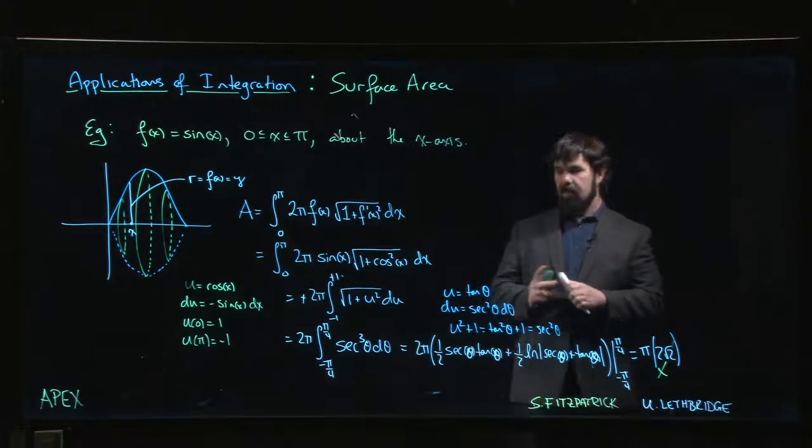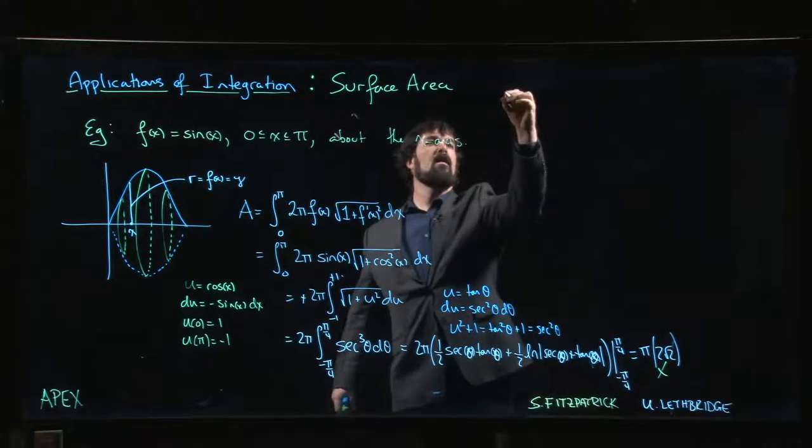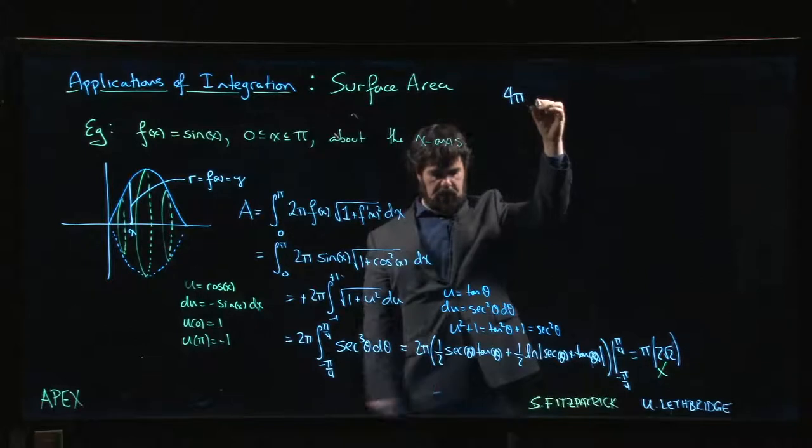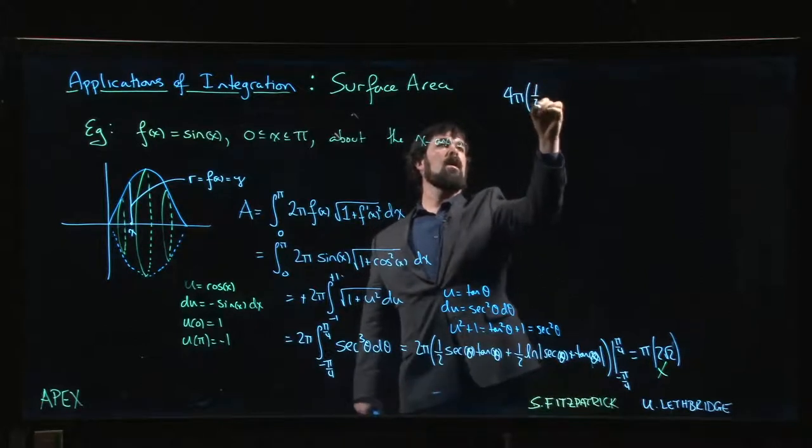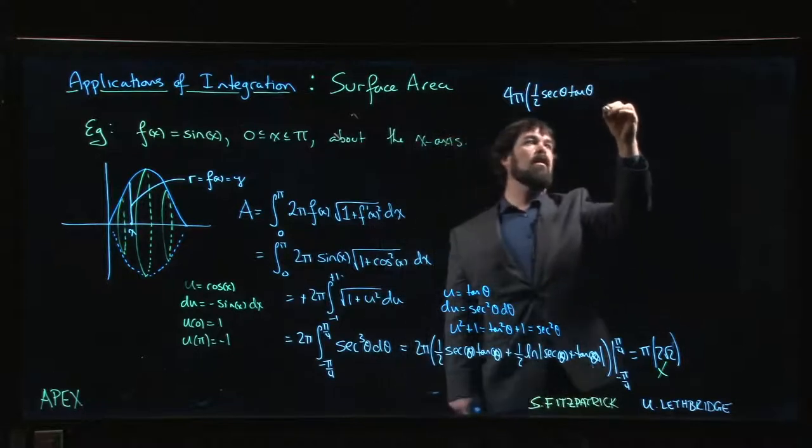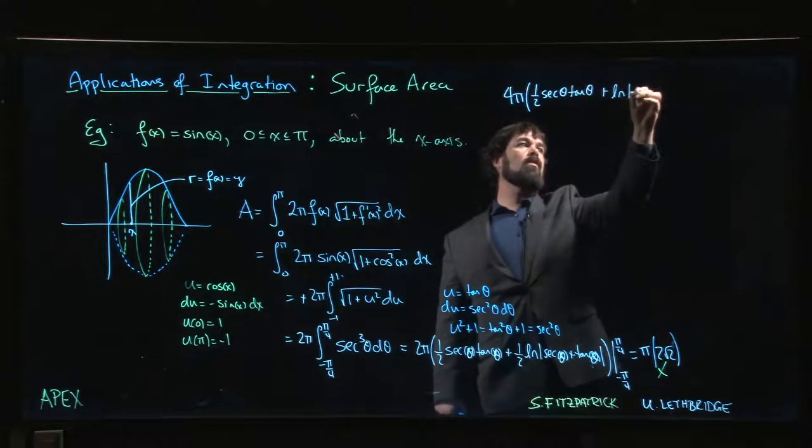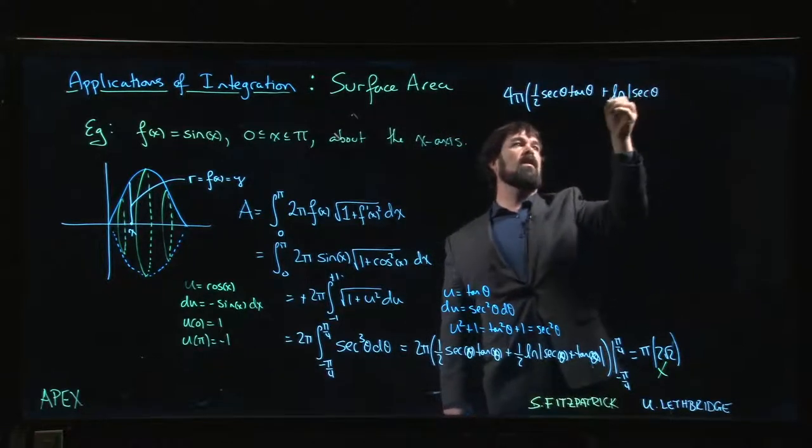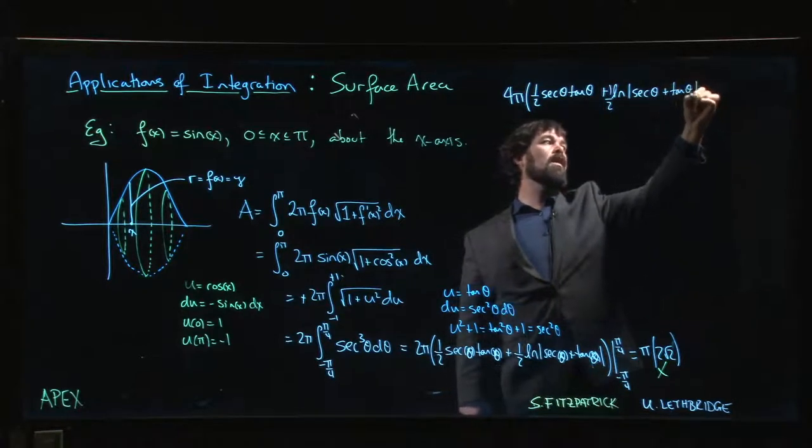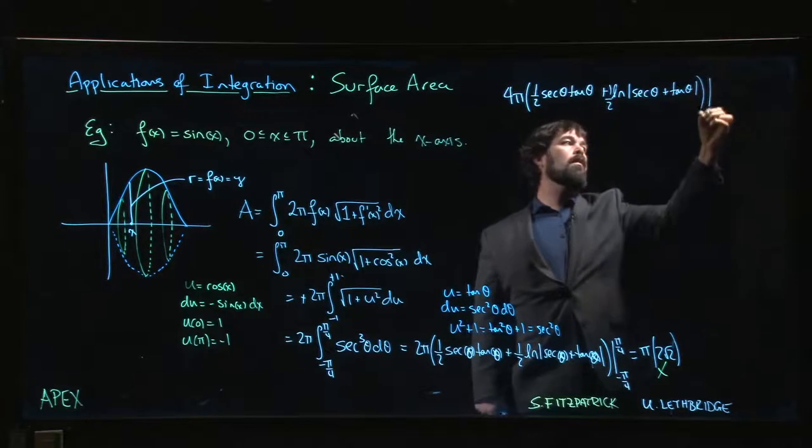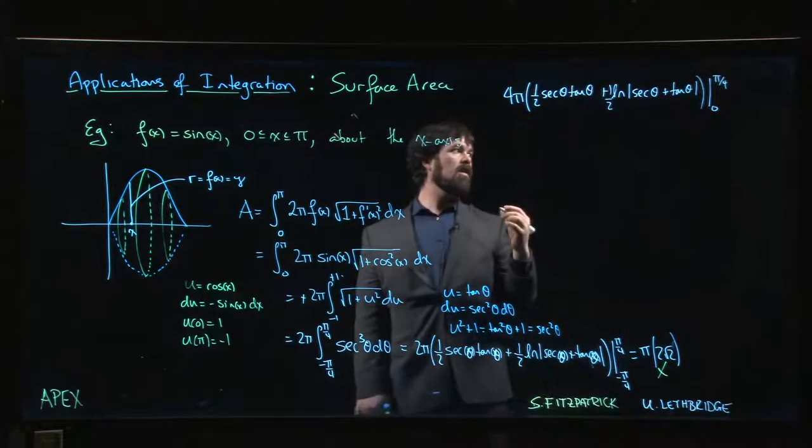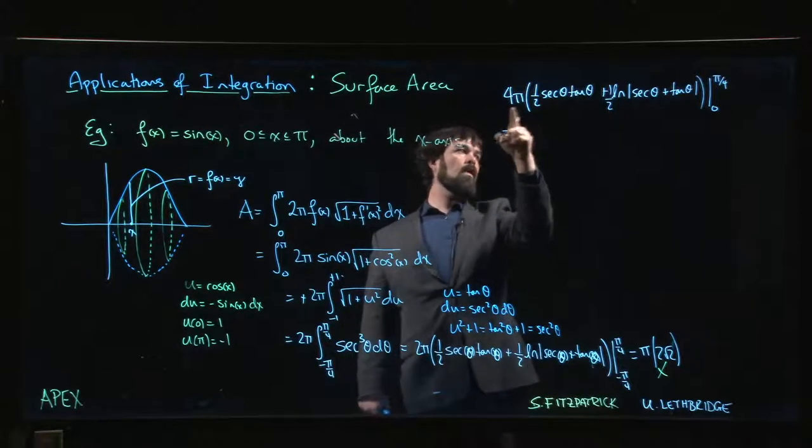We could do it this way: four pi times one-half secant theta tan theta plus the natural log of secant theta plus tan theta, with one-half in front, from zero to pi over four using symmetry.